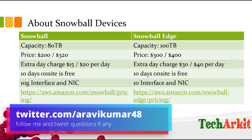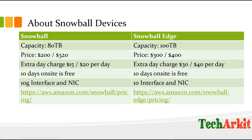The device has a 10G interface as well as a standard network interface. The Snowball supports up to 20 Gbps data transfer rate, while the Snowball Edge can support up to 100 Gbps transfer rate. This allows you to easily upload 100 terabytes of data to the Snowball device quickly.